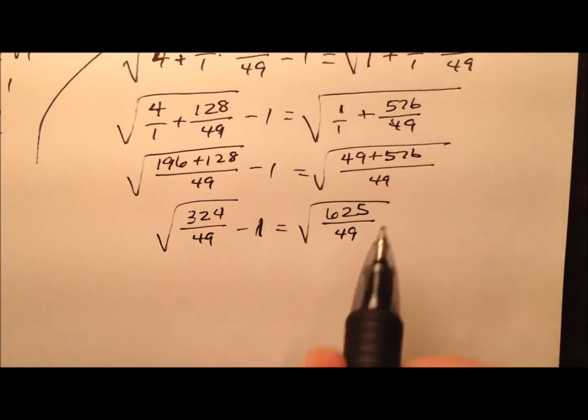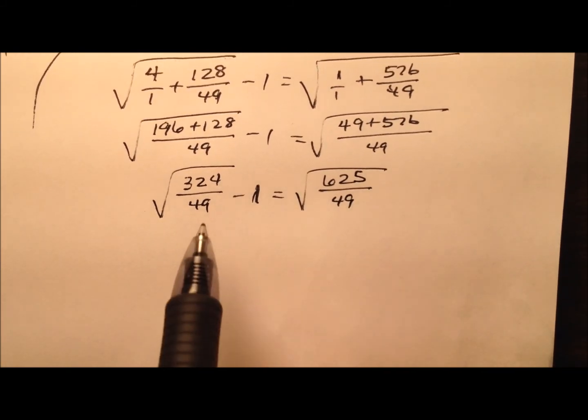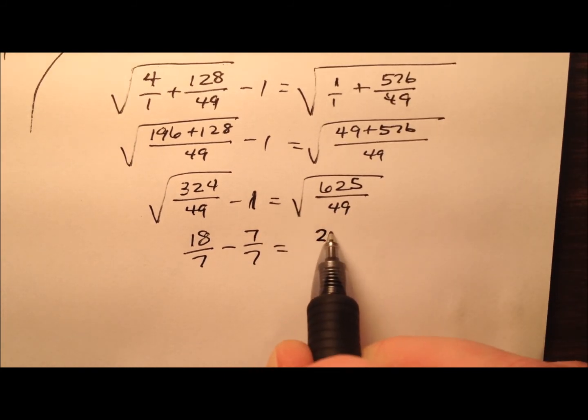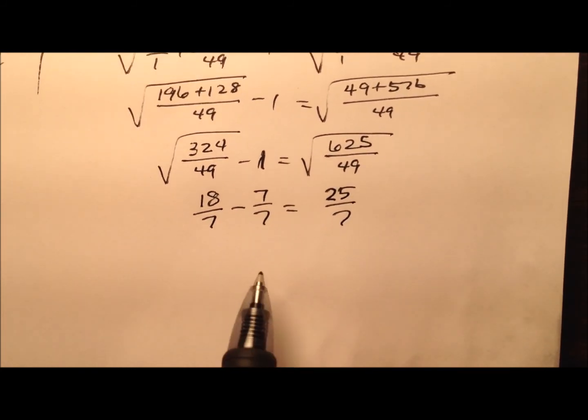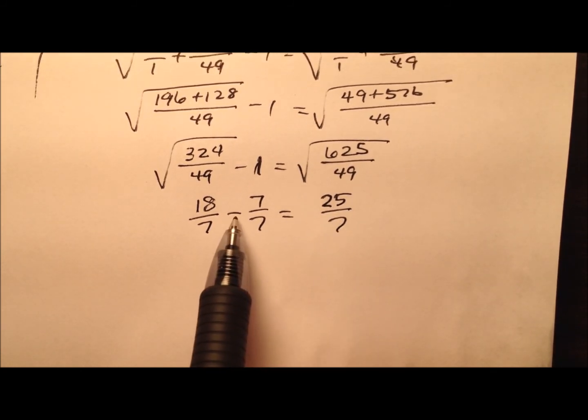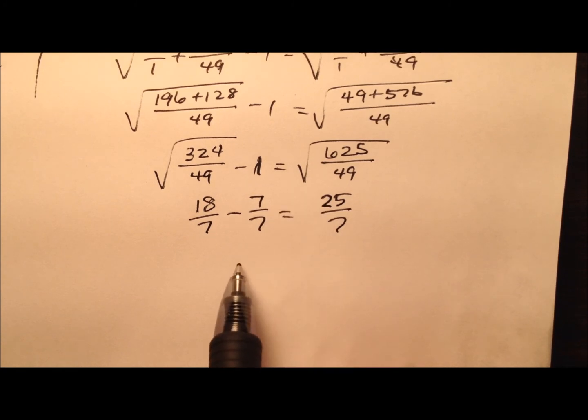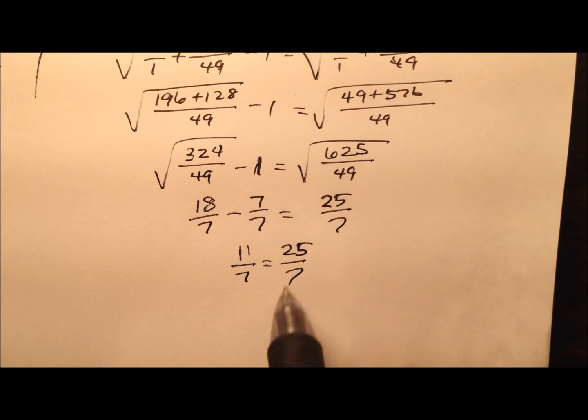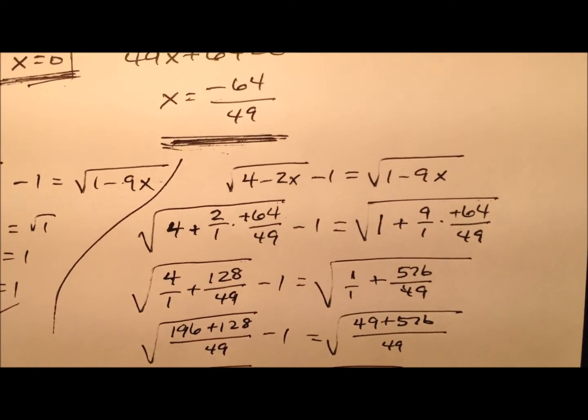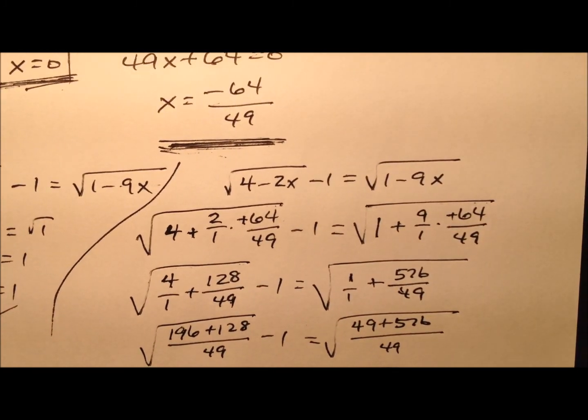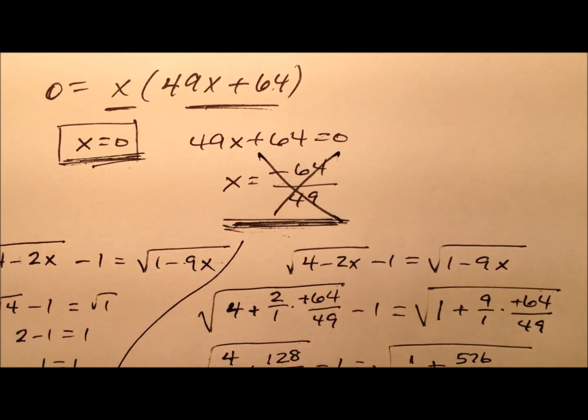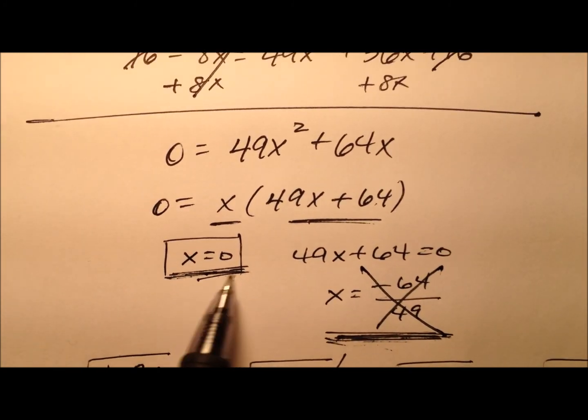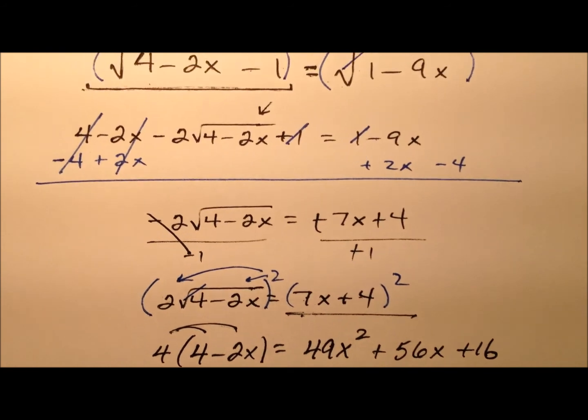So 18 sevenths minus 1, which will be 7 over 7, and 25 over 7. It almost works. If this had been a plus right here, then it would have worked, but here we see 11 over 7 equals 25 over 7, and that's a no-go. So this negative 64 over 49 is going to be an extraneous solution. This will not work. So the only solution for this equation is going to be x equals 0.